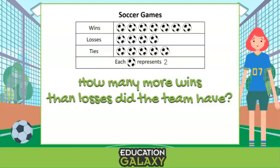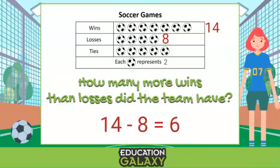The question asks how many more wins than losses did the team have? So let's count the wins: 2, 4, 6, 8, 10, 12, 14. Now let's count the losses: 2, 4, 6, 8. So to calculate how many more, we need to subtract. 14 minus 8 equals six. So we won six more games than we lost.